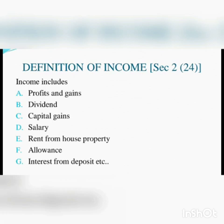Income includes: capital gain, salary, rent from house property, allowances, and interest from deposits. As per the definition under Section 2, sub-section 24, income includes profit and gain, dividend, capital gain, salary, rent from house property, and interest from deposits.